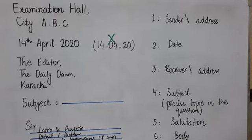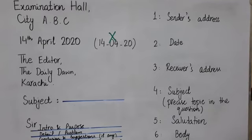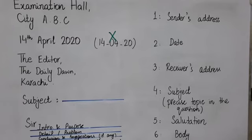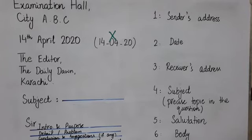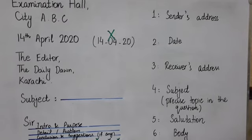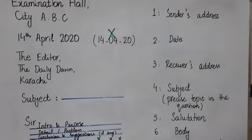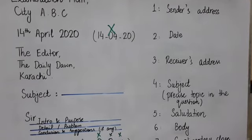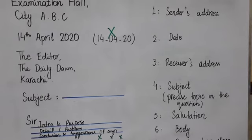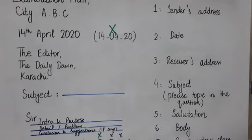The receiver is the person being addressed. In this part you are supposed to write the receiver's designation and address. For example, if you are writing a letter to the editor, instead of writing his or her name, you write 'The Editor,' then the name of the newspaper, and then the name of the city. So write the designation and address in the receiver's address. The fourth part is the subject — the precise topic mentioned in the question, the topic regarding which the letter is written. Subject is now mandatory to write.